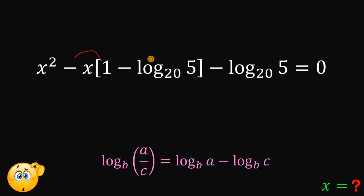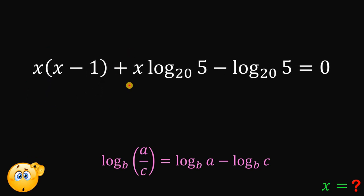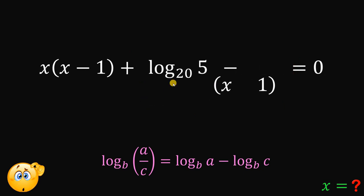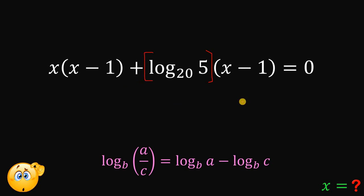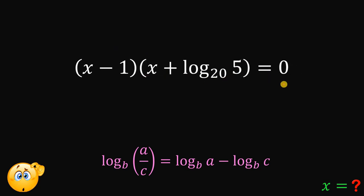Now let's distribute negative x to 1 and negative logarithm of 5 to the base 20. We get x squared minus x plus x times logarithm of 5 to the base 20 minus logarithm of 5 to the base 20. This is now easy to factor: from the first two terms we factor out x to get x times (x minus 1), and from the third and fourth terms we factor out logarithm of 5 to the base 20 to get logarithm of 5 to the base 20 times (x minus 1). We then factor out the common factor (x minus 1), giving us (x minus 1) times (x plus logarithm of 5 to the base 20) equals 0.